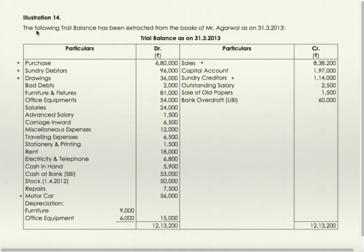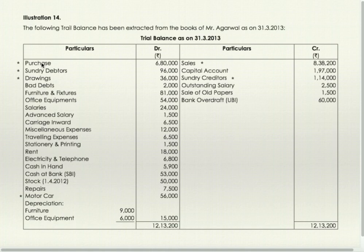Now go to Illustration 14. The following is a trial balance from the books of Agarwal as on 31st March 2030. Purchases, debtors, and drawings have got adjustments, that's why a star is there. Motor car is also having a star. Sales having a star. And creditors is having a star. All these have got adjustments.